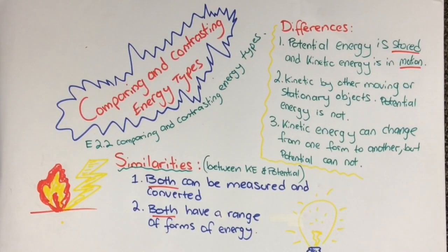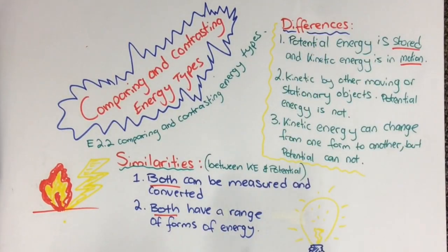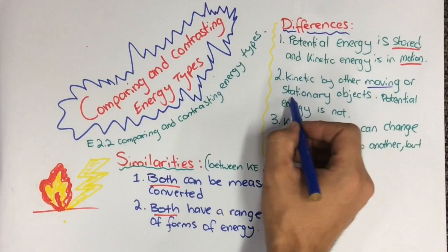Kinetic energy is influenced by other moving or stationary objects in its environment or path, whereas potential energy isn't.